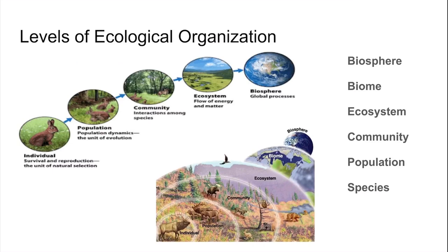Above that is a community, which summarizes the interactions among species, because it is two or more groups of interacting species with a combination of plants, fungi, and microbes.